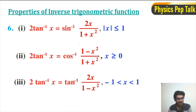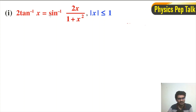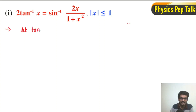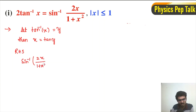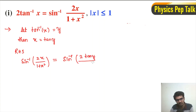Let us derive these three properties one by one. First one: 2 tan inverse of x is equal to sin inverse of 2x divided by 1 plus x square, for mod x less than or equal to 1. Let tan inverse of x equal y, so x is equal to tan y. Consider the RHS term 2x divided by 1 plus x square, and substitute x equal to tan y. We get sin inverse of 2 tan y divided by 1 plus tan square y.